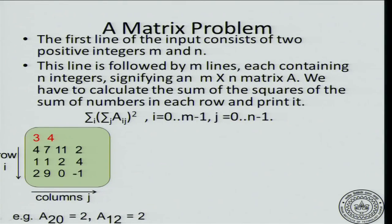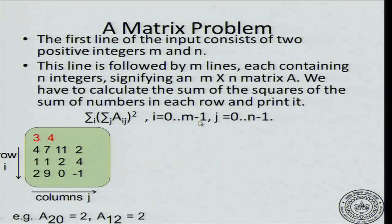Let us look at the formula. What we want is: summation over j of a[i][j], then square that sum, and then do the summation over i. So i is an index which goes over the rows. In C, we adopt the convention that the first row starts with 0, so it goes from 0 to m minus 1. Similarly, the first column starts with index 0, so it goes until n minus 1.